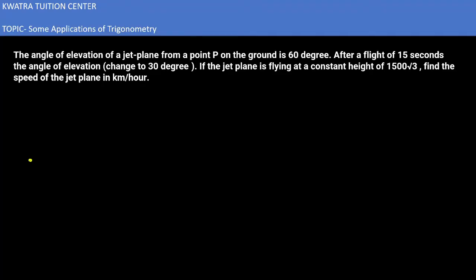So here we have some information about the first point in respect. It would be 60 degrees. Our jet plane is flying at how much distance from the ground? 1500 root 3. After it, they are saying that angle of elevation changed to 30. So our angle changed, but nothing has changed. It is 1500 root 3 because height is constant.